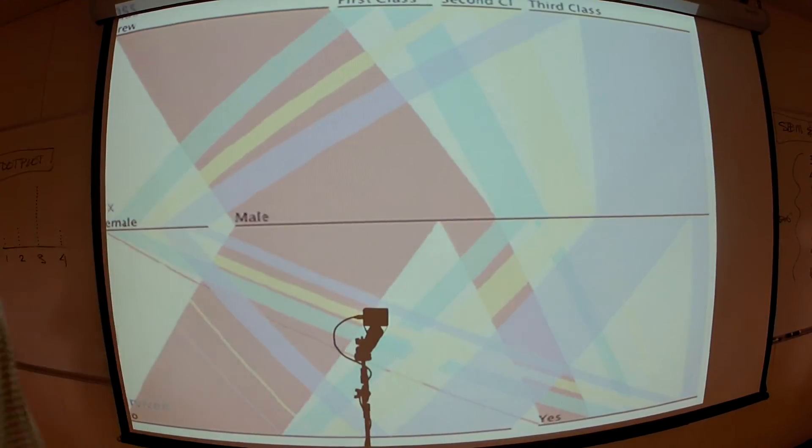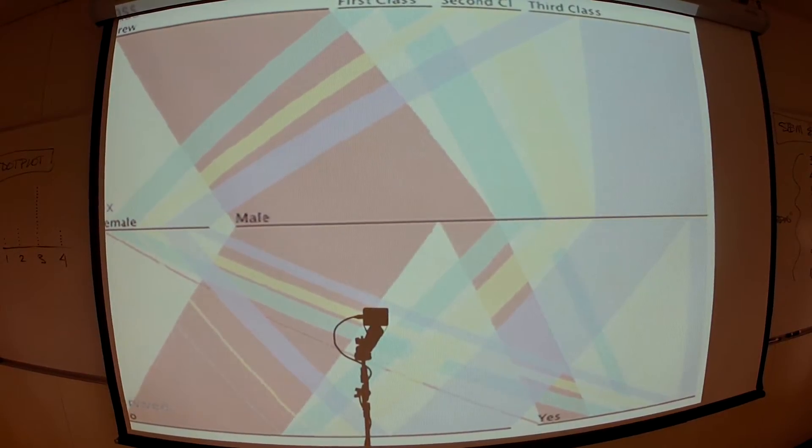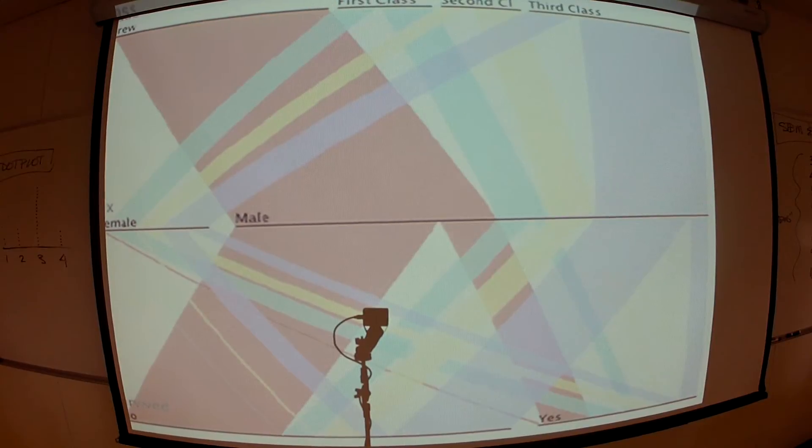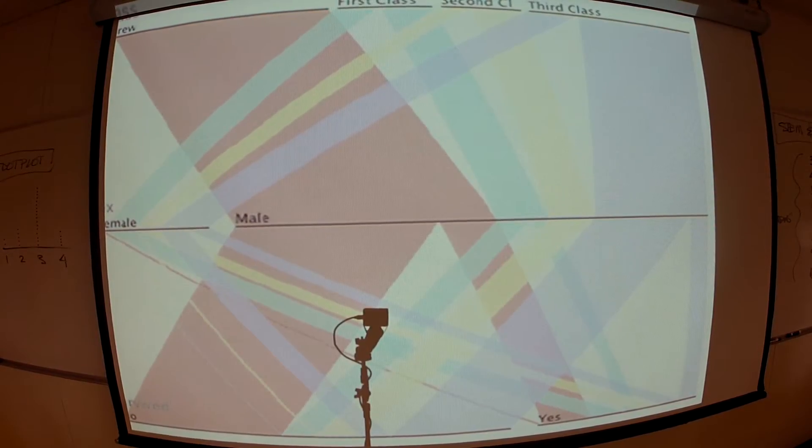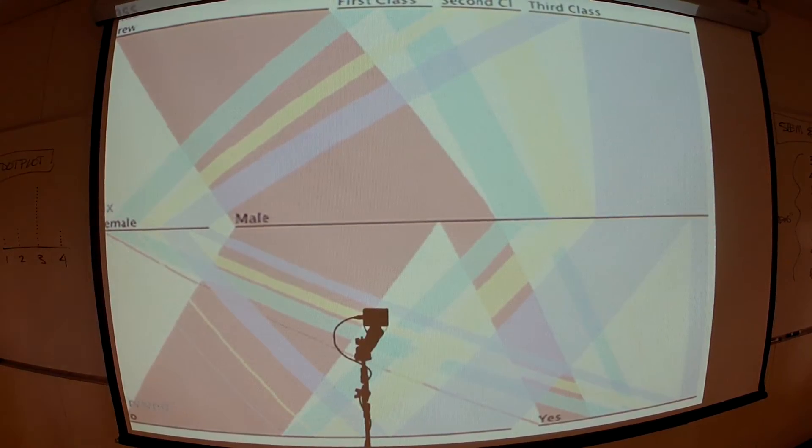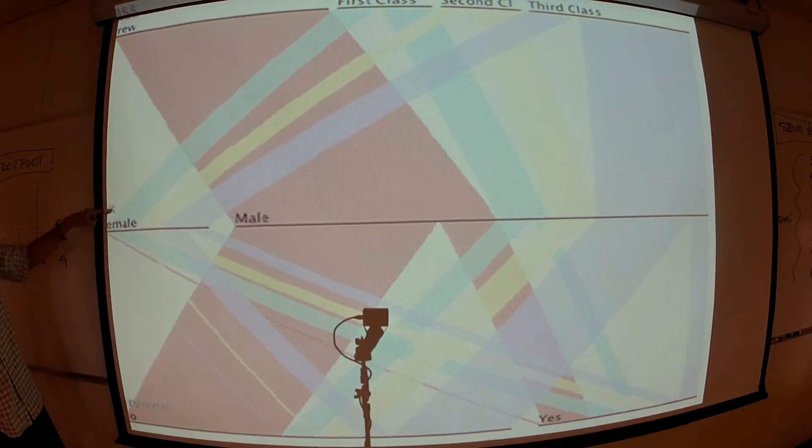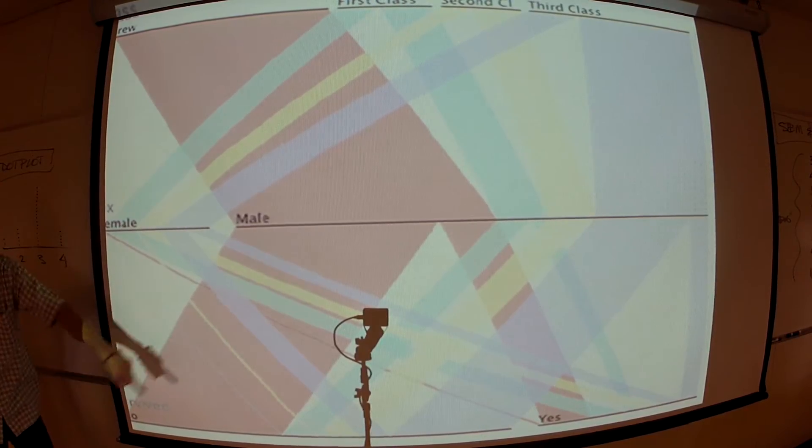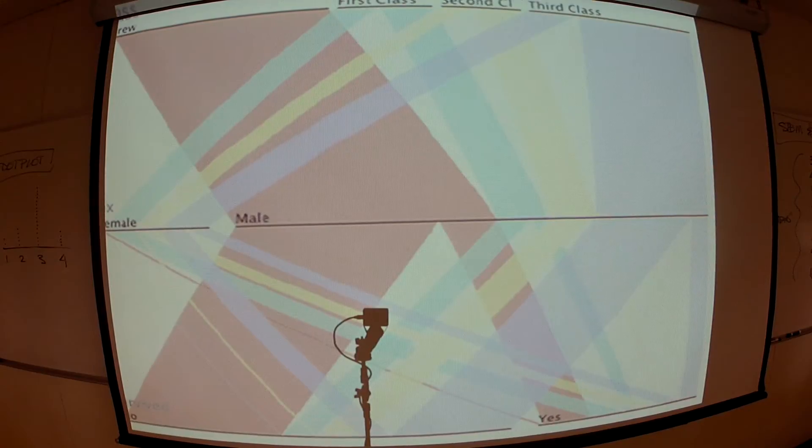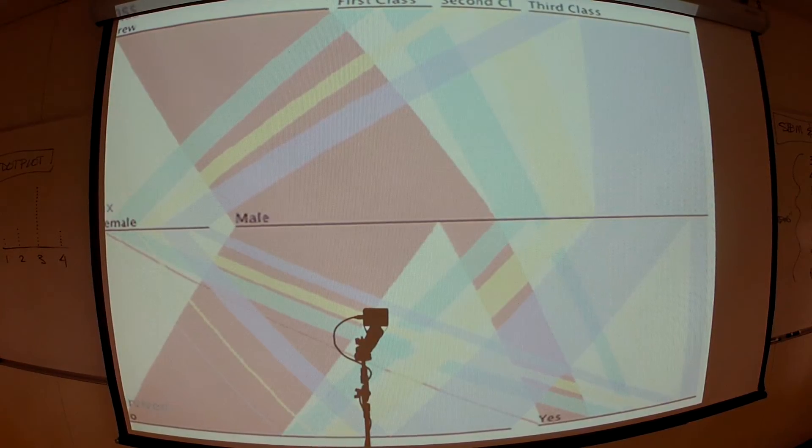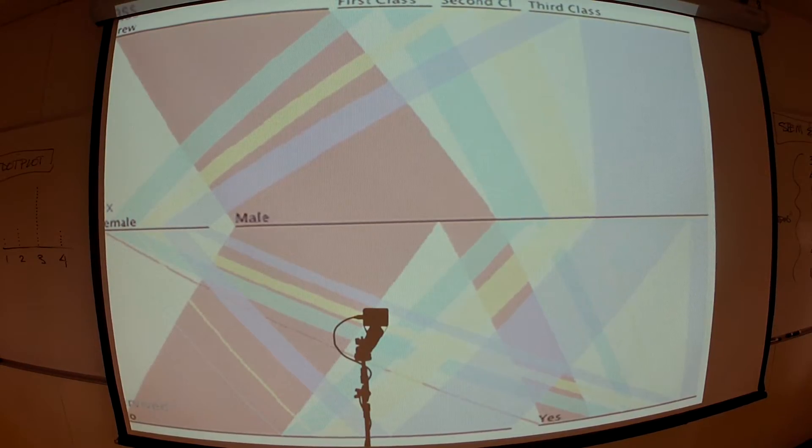This projector doesn't fit the screen very well. So that says crew. It says class, crew, first class, second class, third class. Sex, female, male, survived, no, yes. Close, damn close. This, this, this event represented in this data just had a big anniversary. Yes, Jamie, Jamie's got it. In 1912, the Titanic sank, North Atlantic. This is a roster of everybody on board and what happened to them and what gender they were.